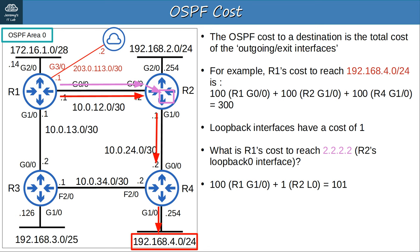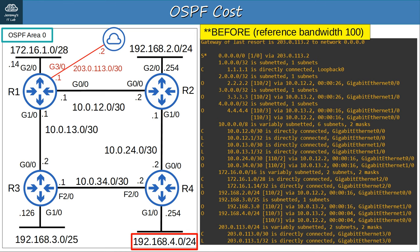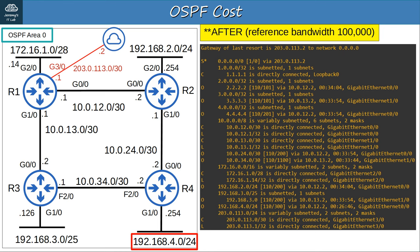Here is R1's routing table before changing the reference bandwidth, so all routers have the default reference bandwidth of 100 Mbps. Notice it has two routes to 192.168.4.0 — one via R2 and one via R3. Even though the connection between R3 and R4 is a slower fast Ethernet connection, it has the same cost of 1 as the gigabit Ethernet interfaces. After changing the reference bandwidth to 100,000 Mbps, R1 only inserts one route to 192.168.4.0 with a cost of 300, and the cost to 2.2.2.2 is 101 as calculated.